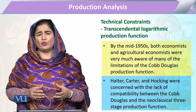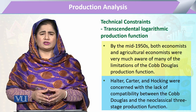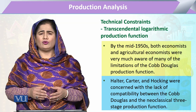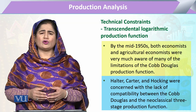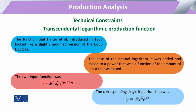Keeping their work in view, they slightly modified the existing Cobb-Douglas production function by introducing the base E (natural logarithm base) into it. This function was introduced by Hartter in 1957, where base E was added and given a power.